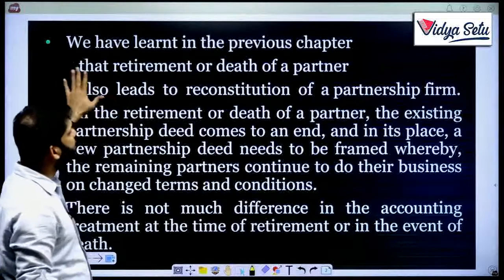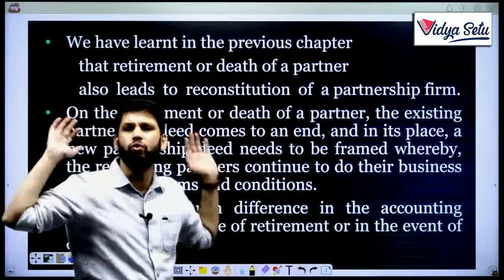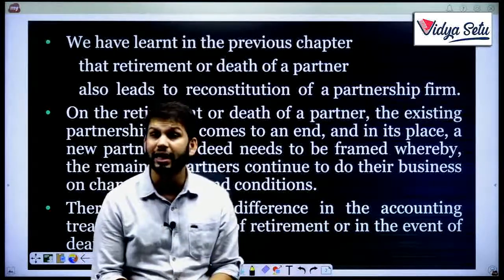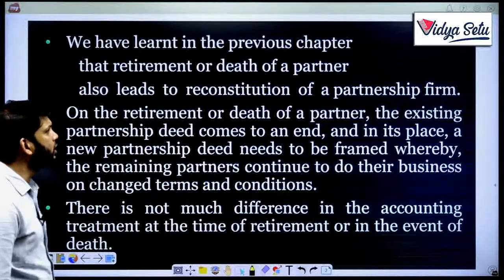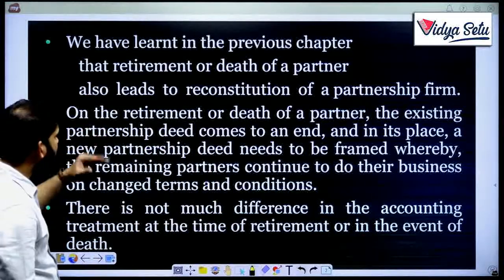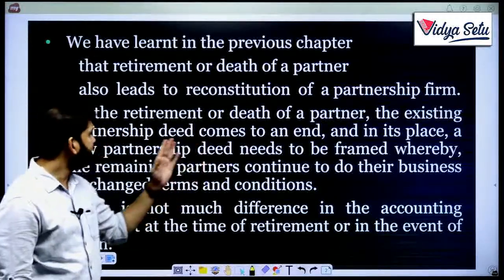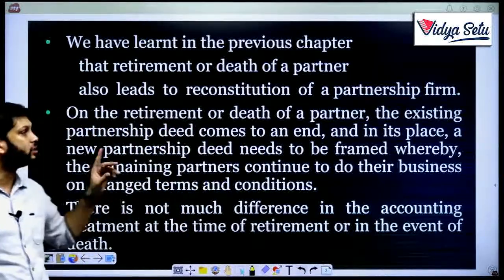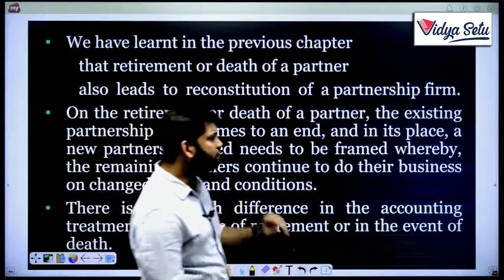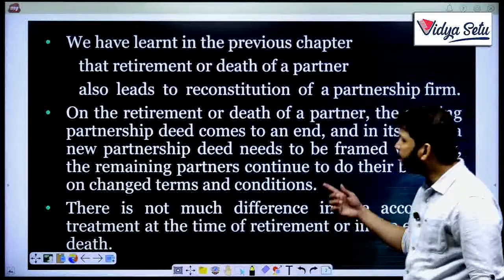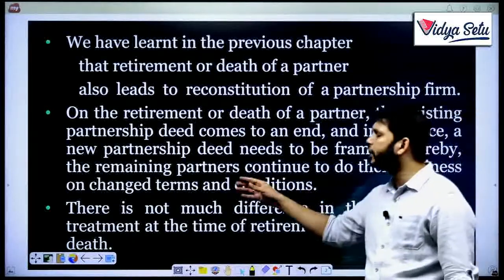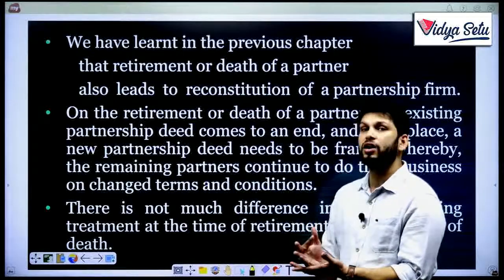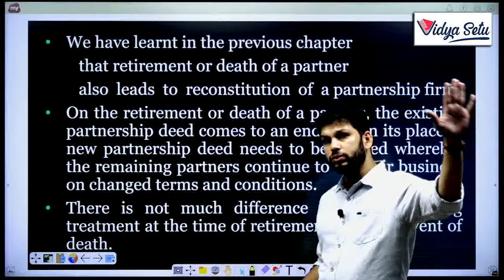In the same way, whenever there is a death or retirement — one partner says 'I don't want to work anymore, bye' — that's retirement. If one partner dies, that's death of a partner. All these lead to reconstitution of a partnership firm. On the retirement or death of a partner, the existing partnership deed comes to an end, and in its place a new partnership deed needs to be framed whereby the remaining partners continue to do business on changed terms and conditions. It's the end of the partnership agreement, not the end of the partnership firm — the firm continues, the agreement changes.